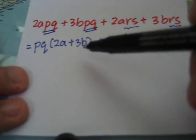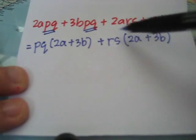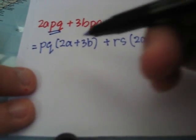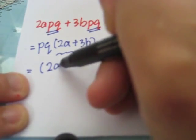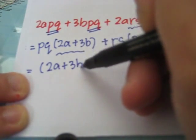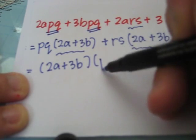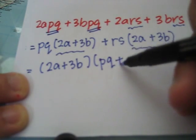Now, from these two huge terms, we see that 2a plus 3b is the common factor. By removing it, this is what is left behind.